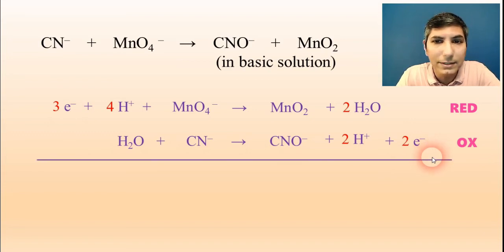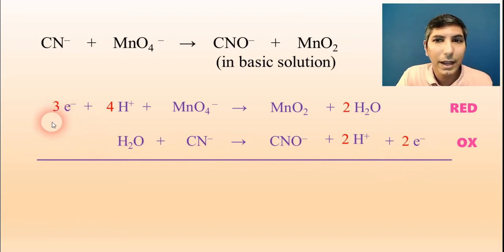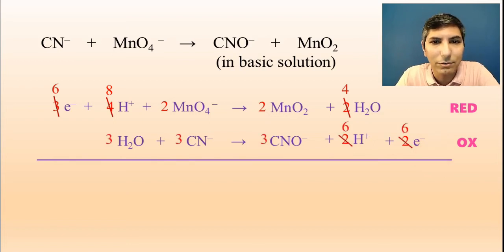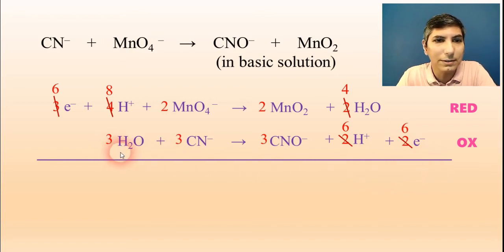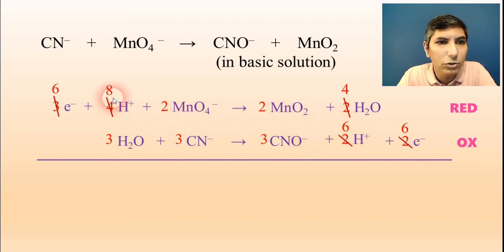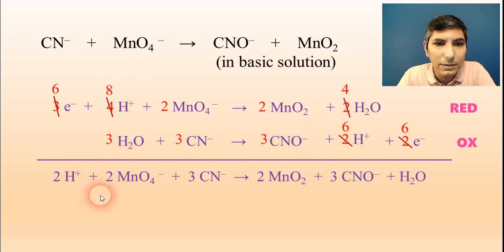Now I'm ready to add the half reactions together. The electrons don't yet cancel, so I multiply half reaction number one by 2 — doubling all coefficients — and triple all coefficients in the second half reaction. Now the 6 electrons cancel out. Three water molecules also cancel, leaving 1 water molecule, and 6 hydrogen ions cancel on both sides, leaving 2 hydrogen ions. This gives my overall balanced equation at this point.